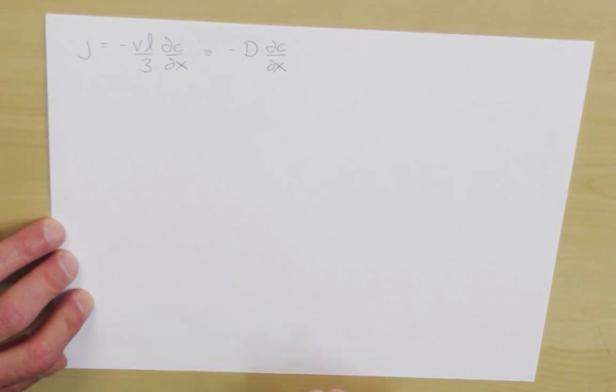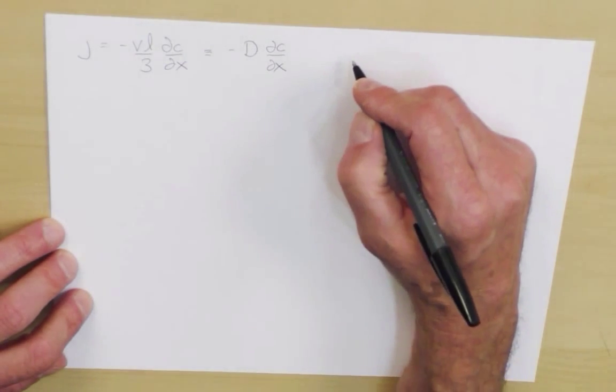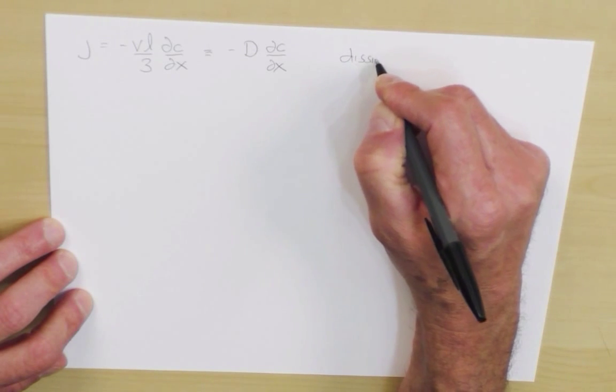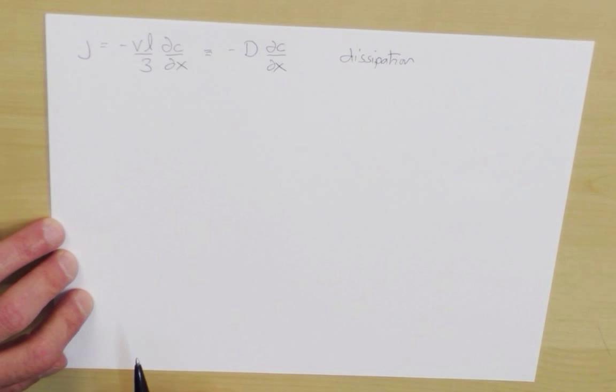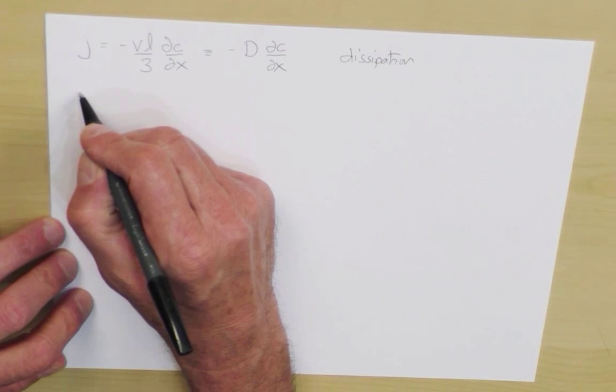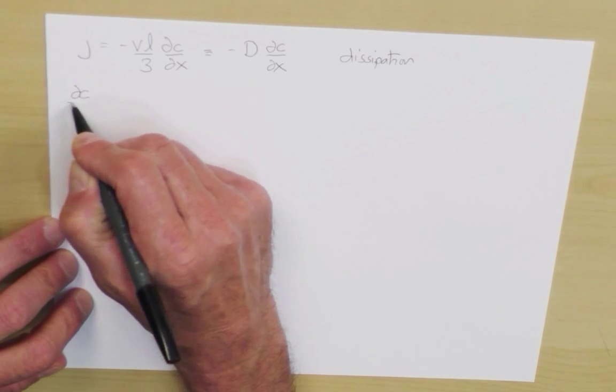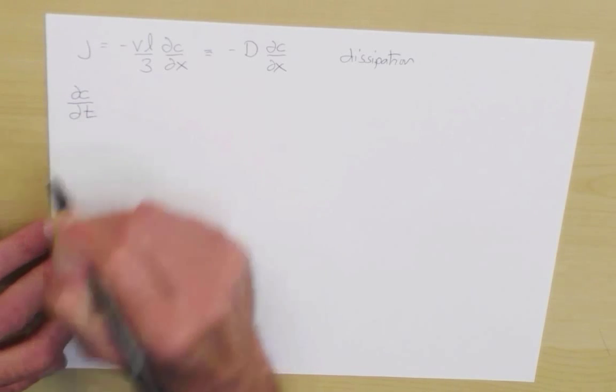This equation sometimes goes by the framework of dissipation because it's describing how a concentration gradient gradually dissipates because of molecular diffusion. On the other hand, we've also derived something else, the diffusion coefficient in another place where it's in the diffusion equation itself.